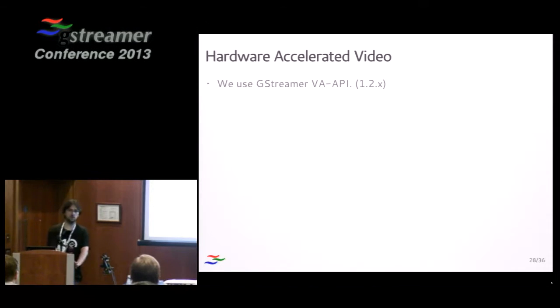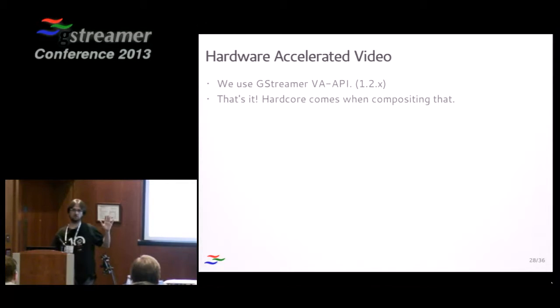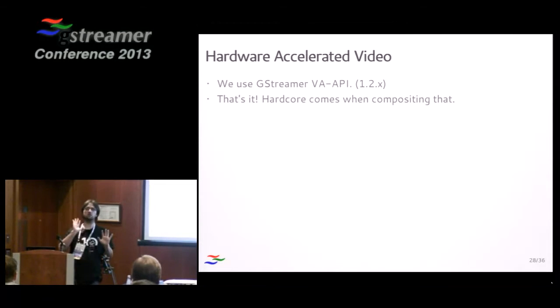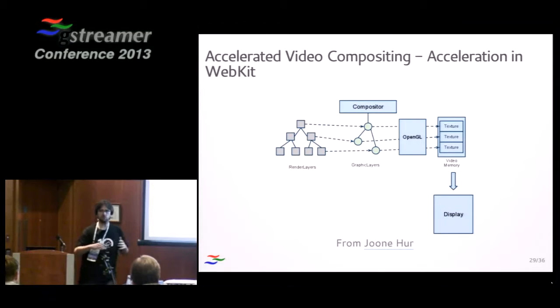Hardware Accelerated video. We use GStreamer VA API in 1.2, and that's it — we don't need to do anything else. The hardware acceleration comes when compositing the video. If you have hardware-accelerated decoding, that's transparent for us. Our concern is when we get those buffers and we need to do stuff with them. So I go to the next point, which is compositing those videos. WebKit is sometimes described as a tree, but WebKit is more like a forest — it has lots of trees.